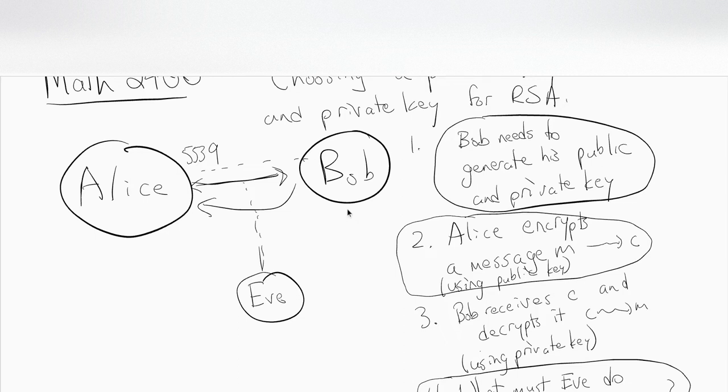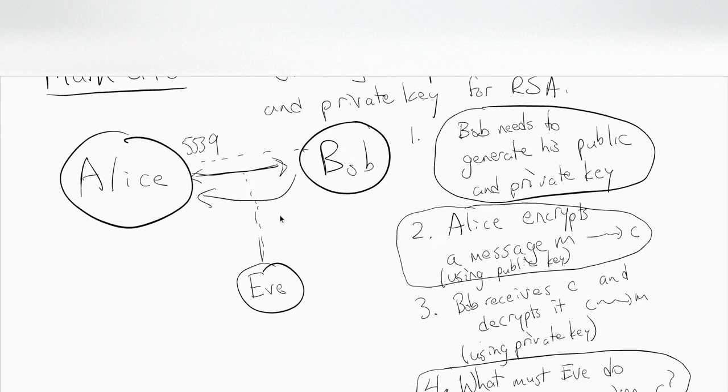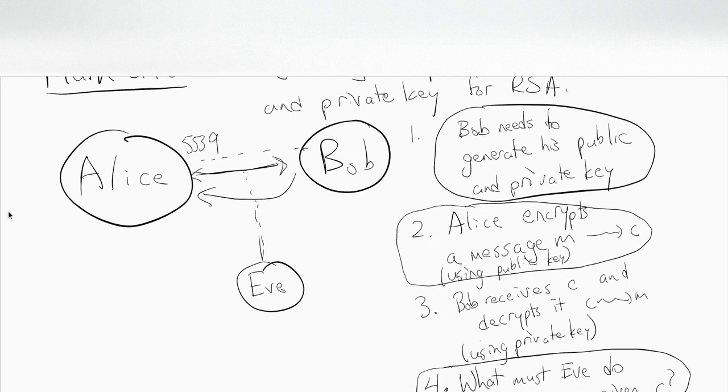It's that public key which allows anyone to send him a secure message which can't be decrypted. Let's discuss how does he generate the public key and the private key. This is elementary number theory, so this is where the number theory comes in.